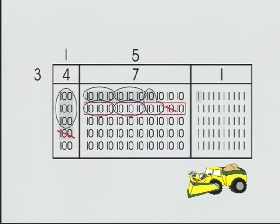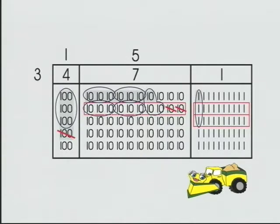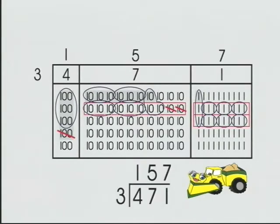We'll trade one 10 for 10 ones, and another 10 for 10 more ones, giving us 21. The group size is 3. 1, 2, 3, 4, 5, 6, 7. Record. The quotient: 157.